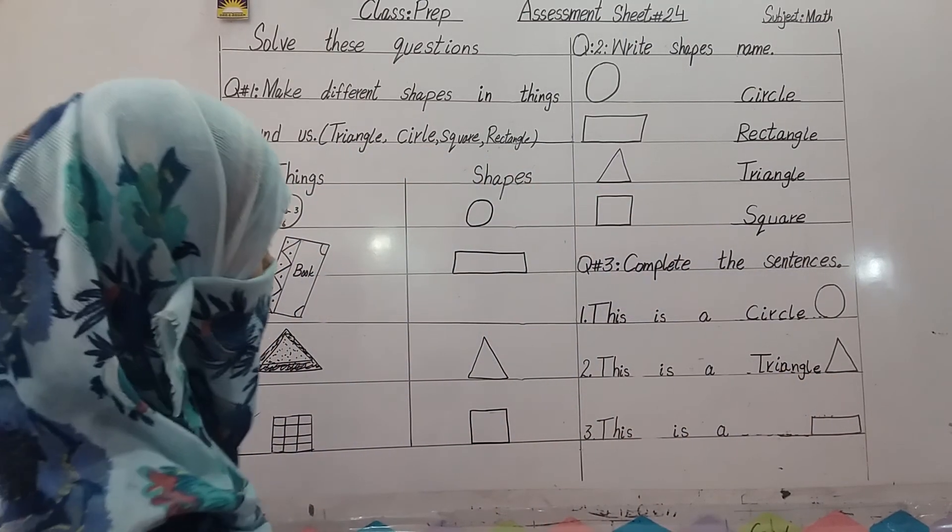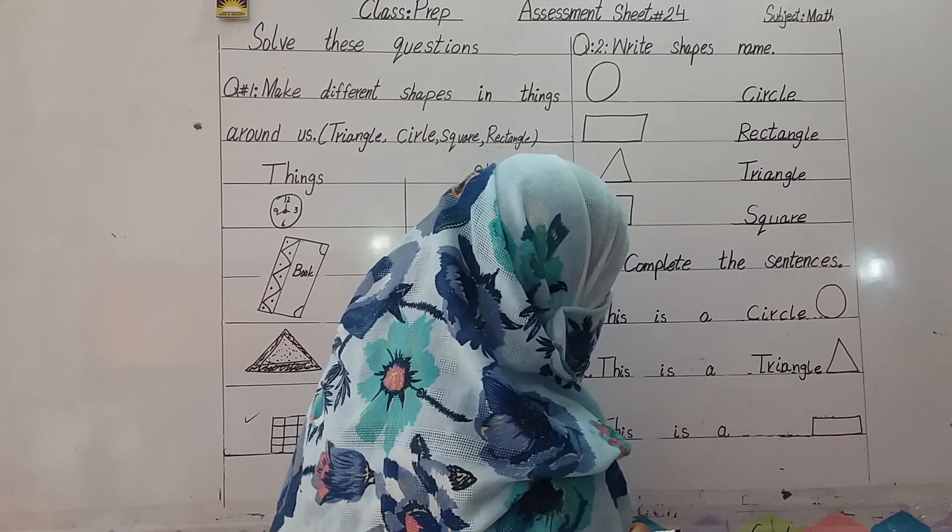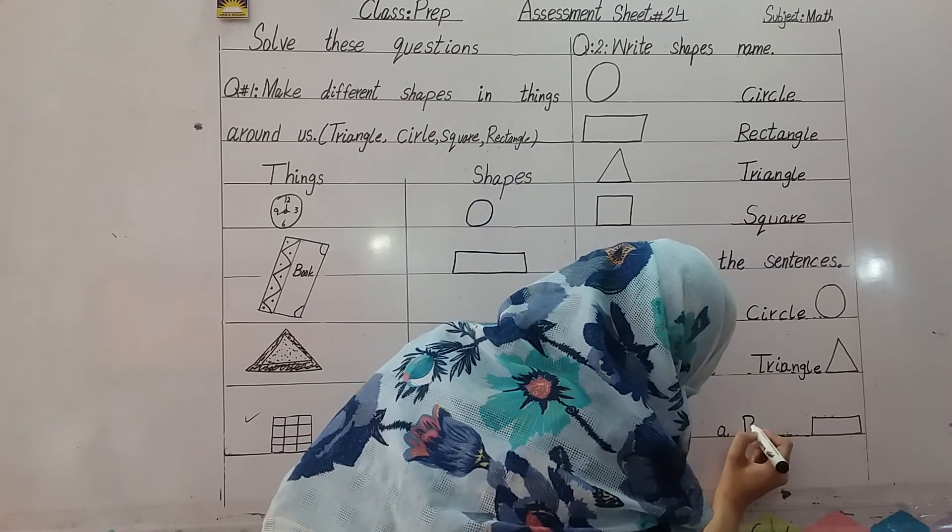Next, third one. This is a dash. What is this shape? Yes, rectangle. So, write here the spell of rectangle.